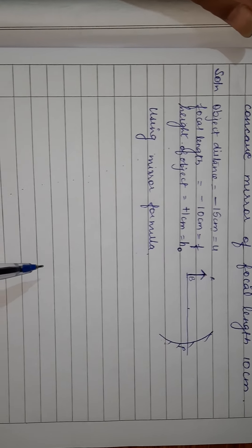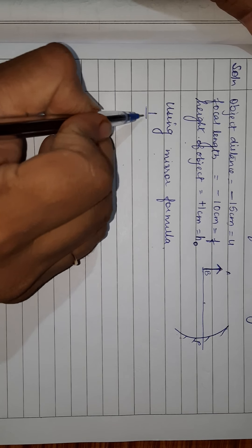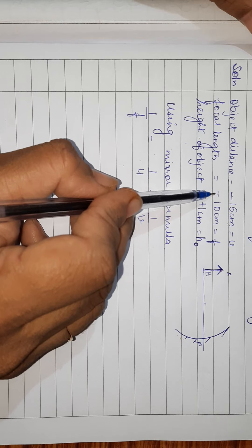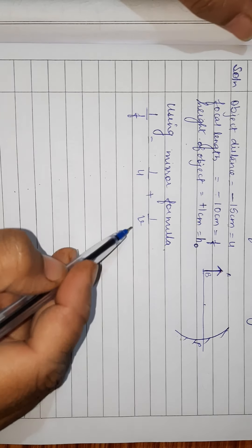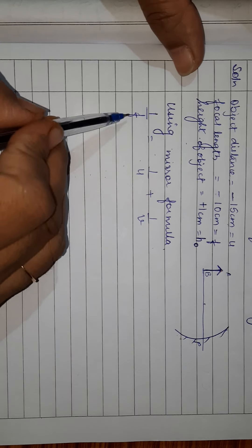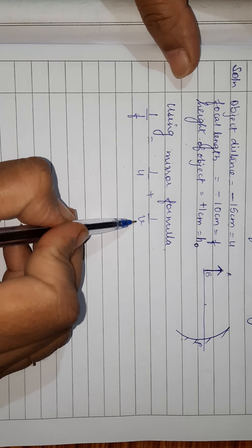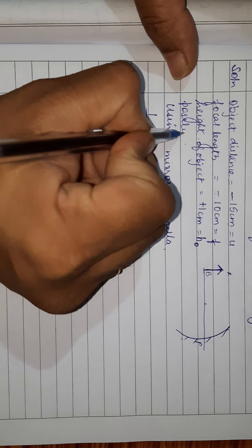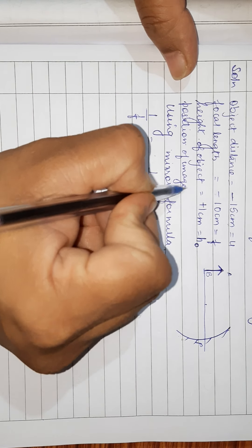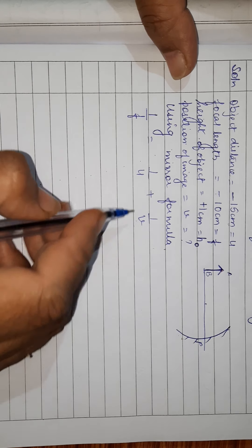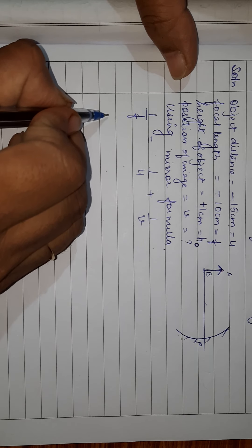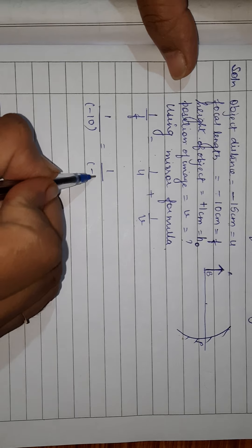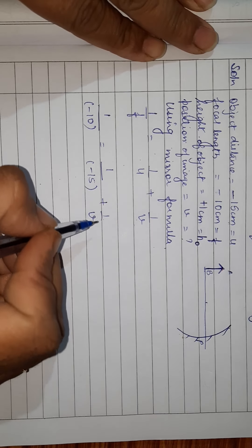Mirror formula is: 1 upon F equals 1 upon U plus 1 upon V. These sign conventions are very important — if you do not put the sign correctly, the answer will come out incorrect. We have the value of U and F, so we can find V, which is the position of image. So 1 upon F is minus 10, U is minus 15.